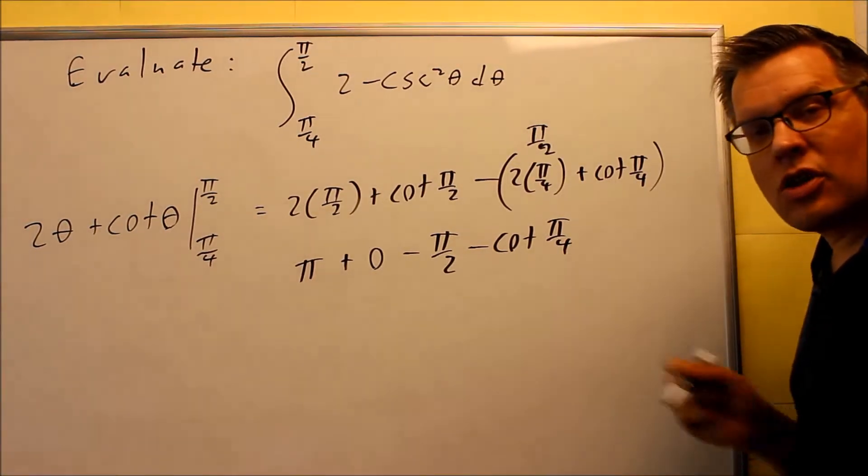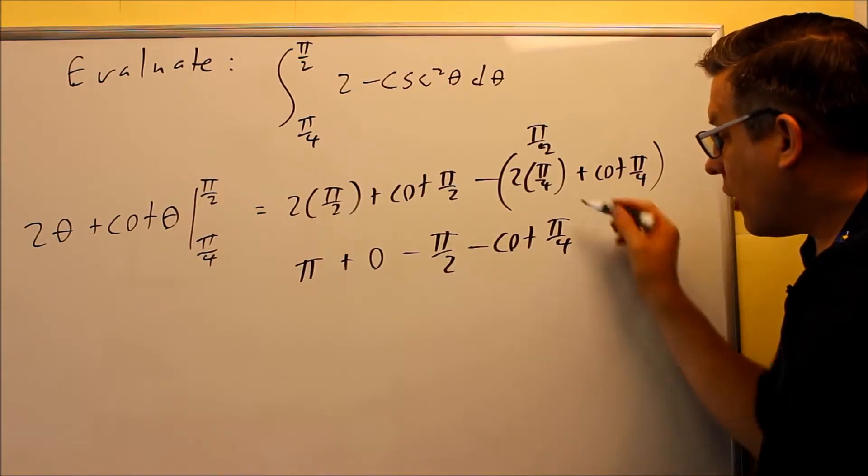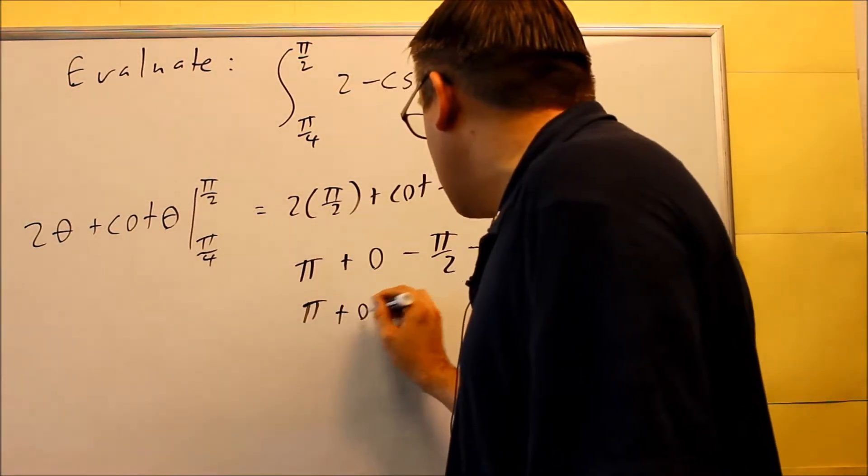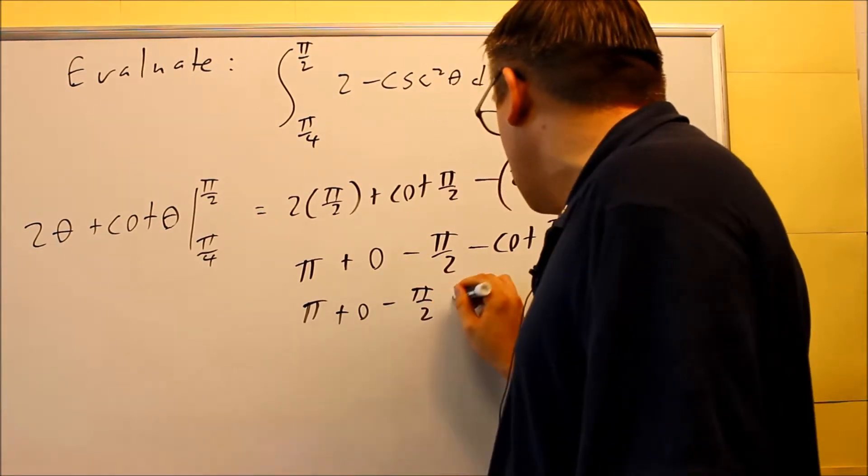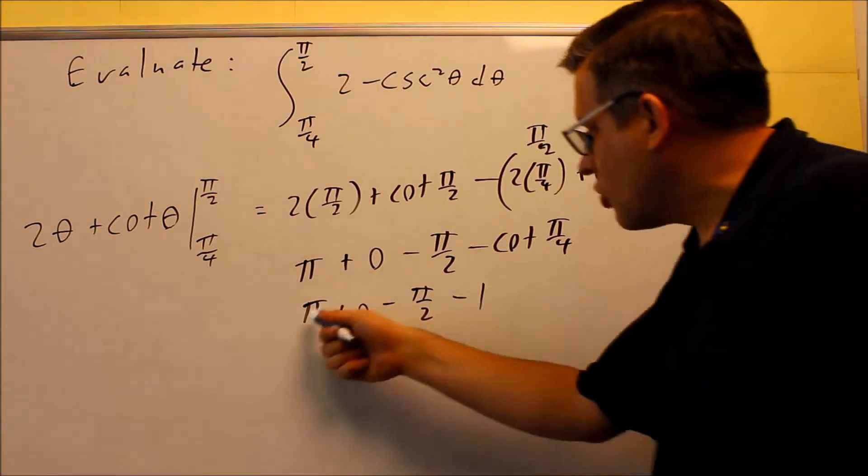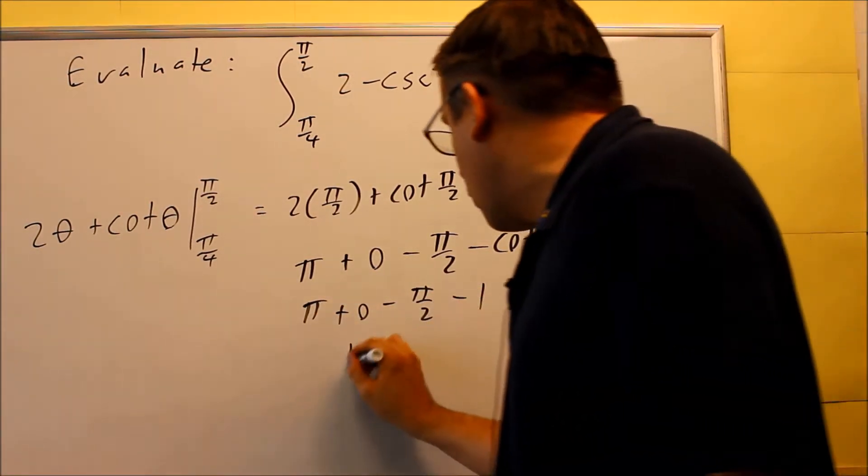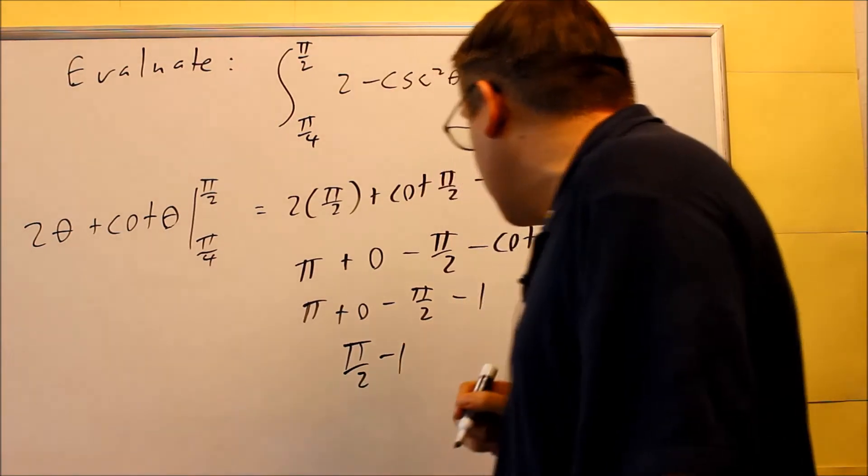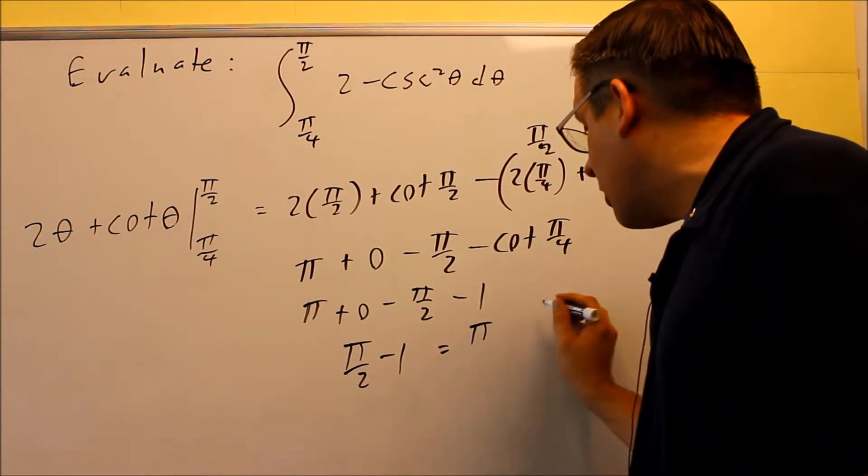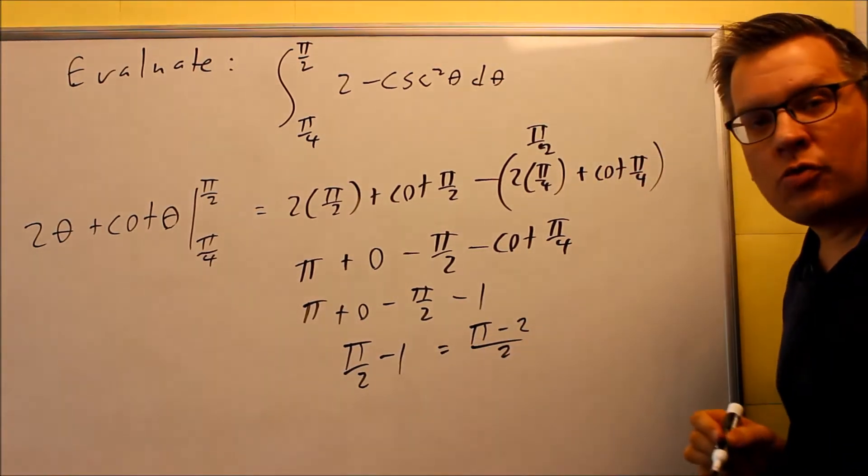We just need to simplify that. Again, cotangent is cosine over sine. When you have that as π over 4, you're going to get a 1. So π plus 0 minus π over 2 minus 1 is what you'll get as a result. So when you do π minus π over 2, you're going to get π over 2 minus 1. So π over 2 minus 1 would be the exact answer. If you'd like to get common denominators, you could do that as well. But either one of those would be the correct answer.